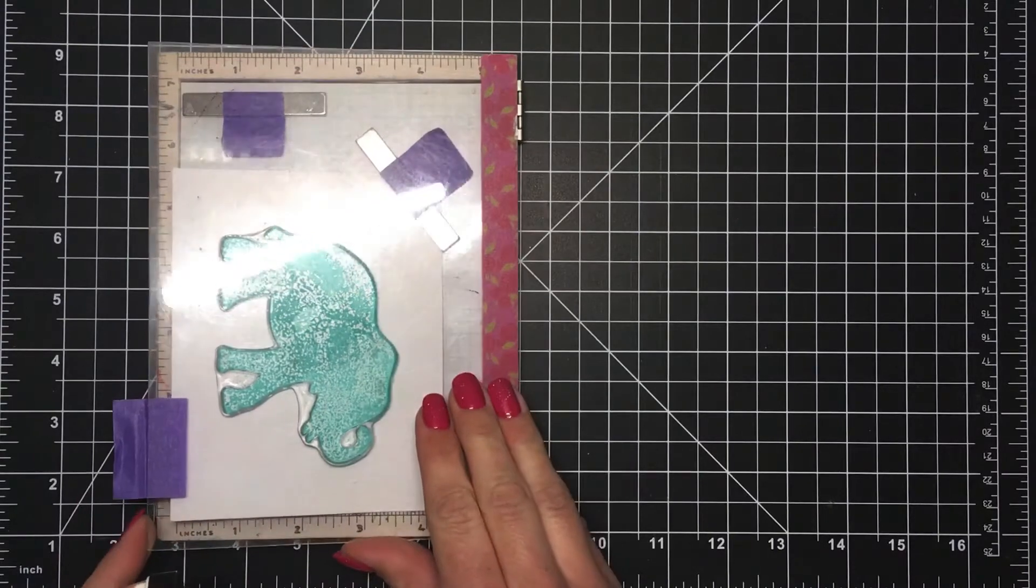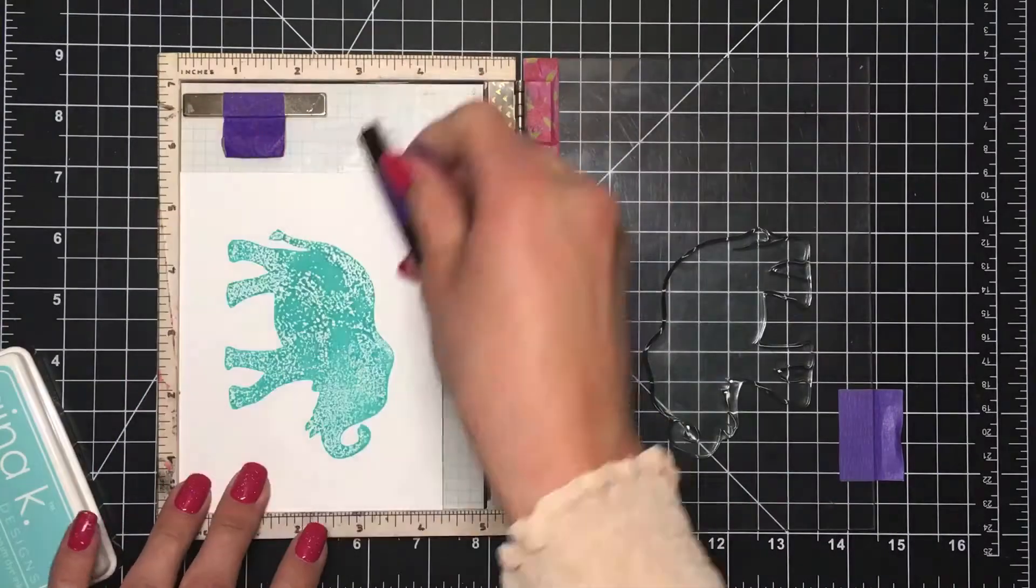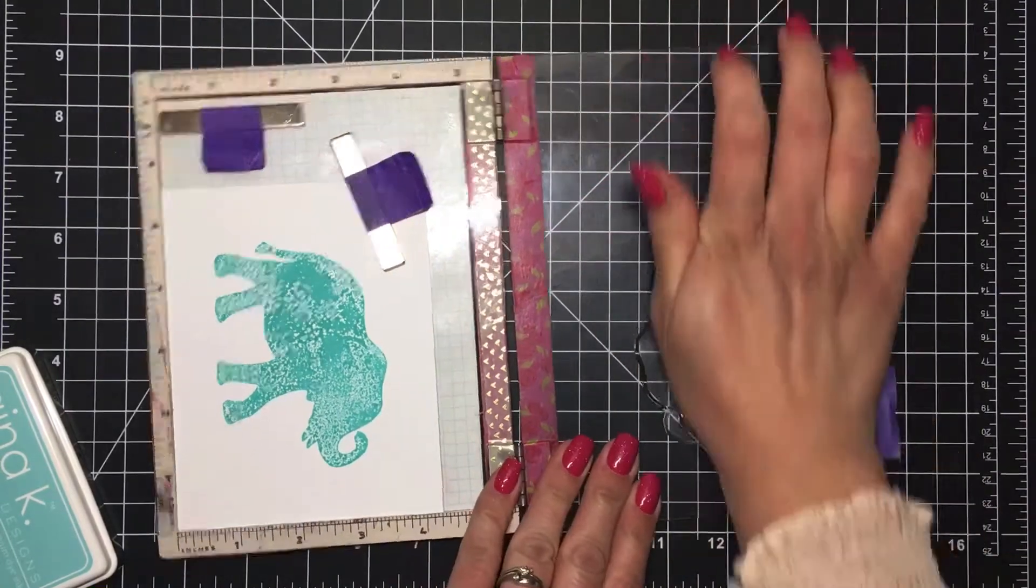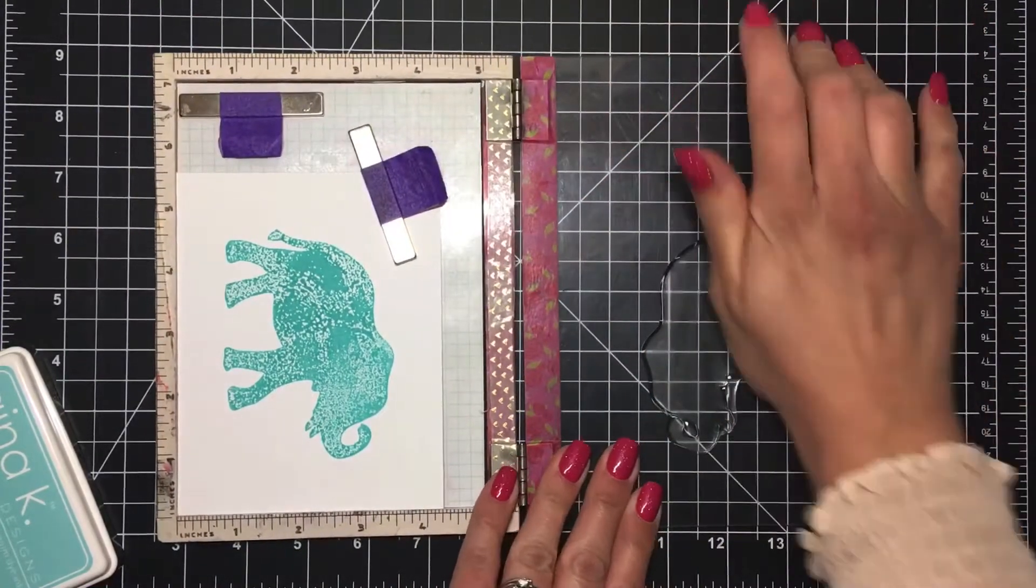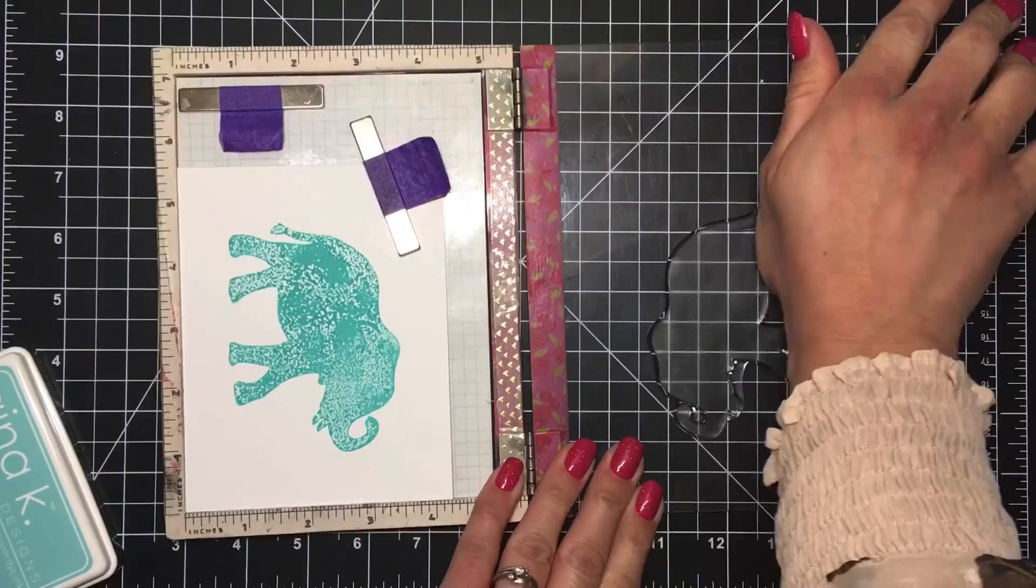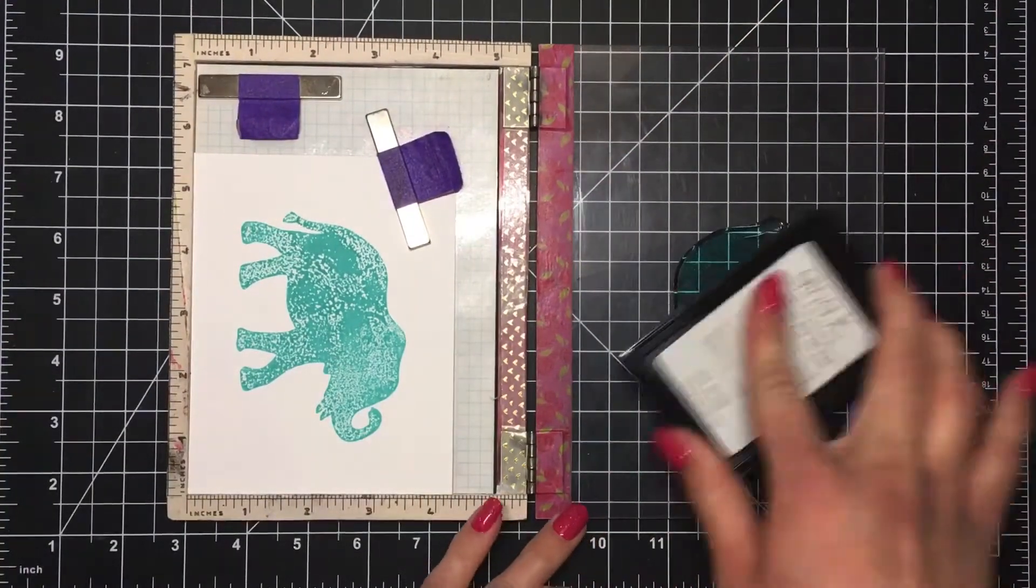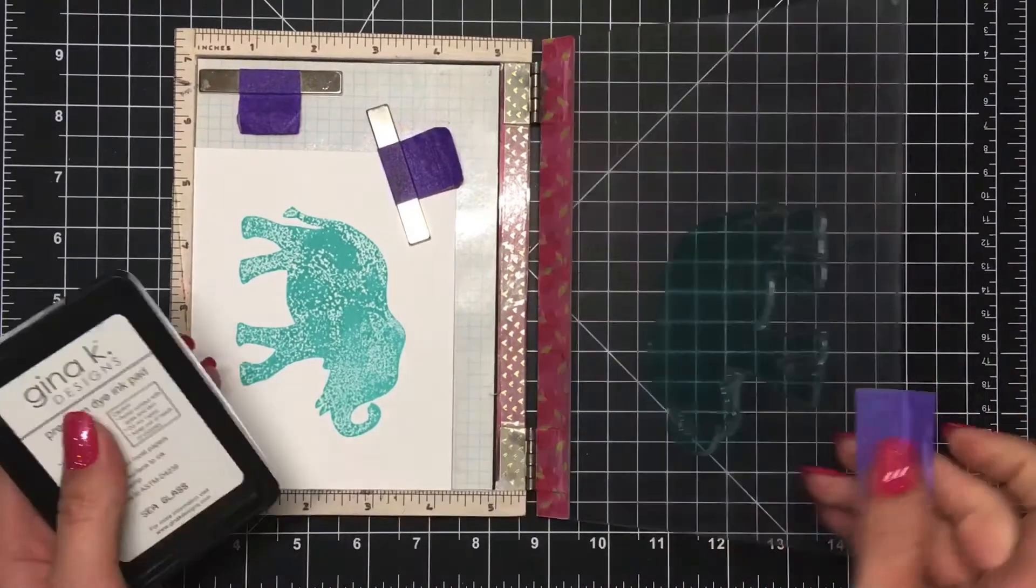As you can see I did not get good coverage. I did not condition my stamp first, so I use my hand and condition that to make it hold the ink better, and then I stamp it down a second time to get the coverage that I wanted.